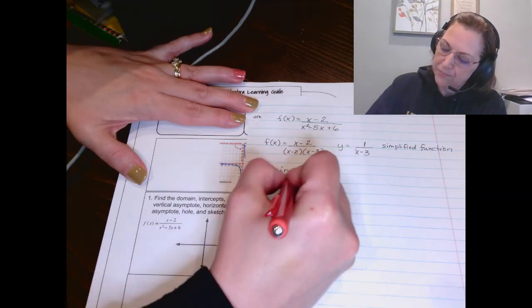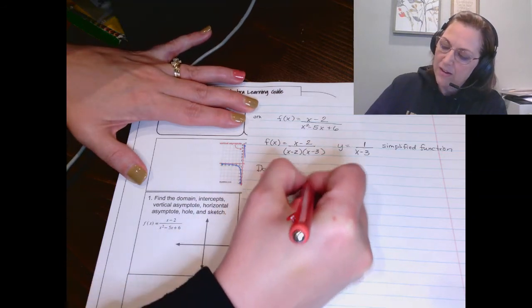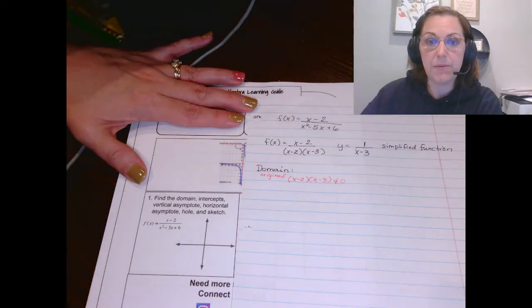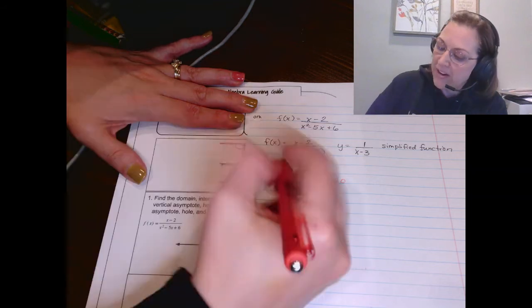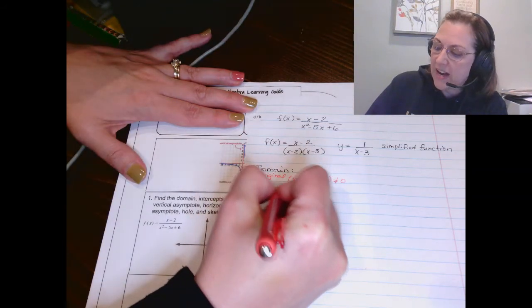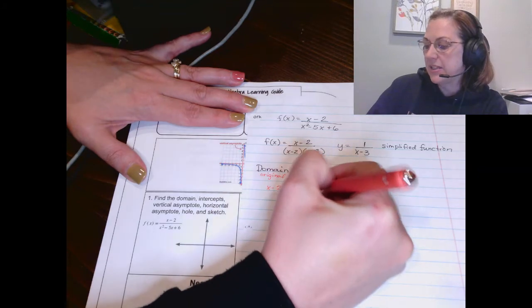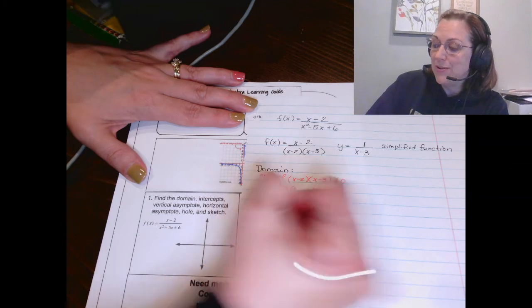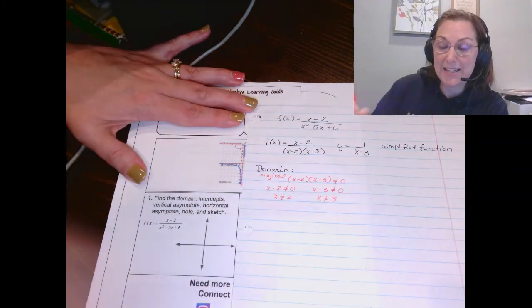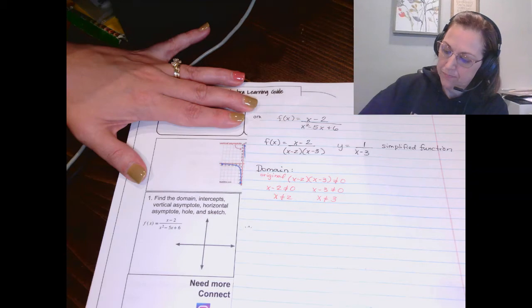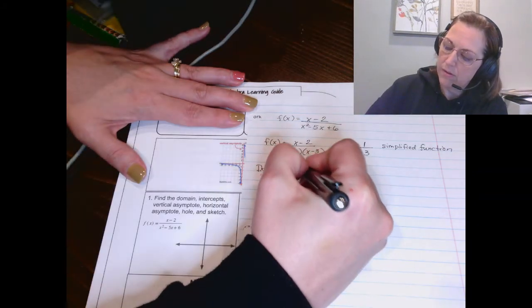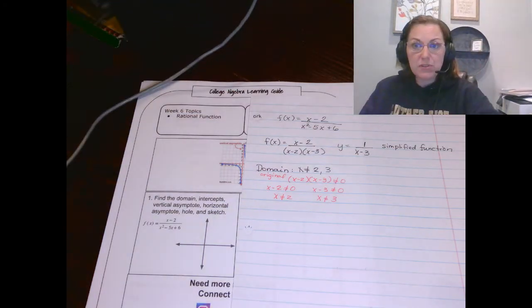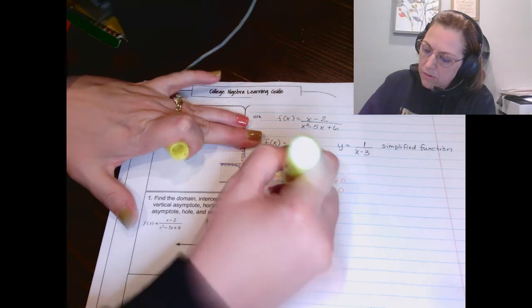So the only one we're dealing with here is denominators cannot equal 0. So take your denominator, the one we factored, and set it equal to cannot equal 0. Friends, super easy when you've already factored it, because now you've got x minus 2 cannot equal 0, and you've got x minus 3 cannot equal 0, which means x cannot be 2 and x cannot be 3. That is your domain. Pretty simple. But remember, it comes from the original.